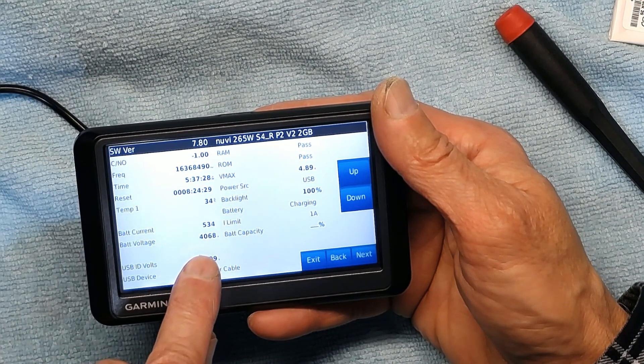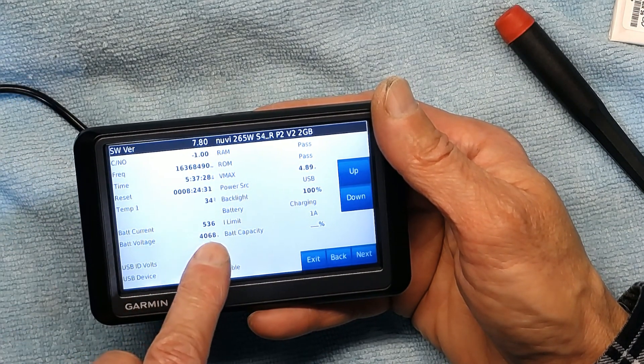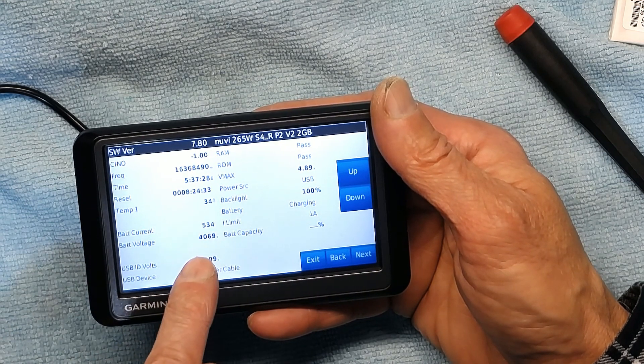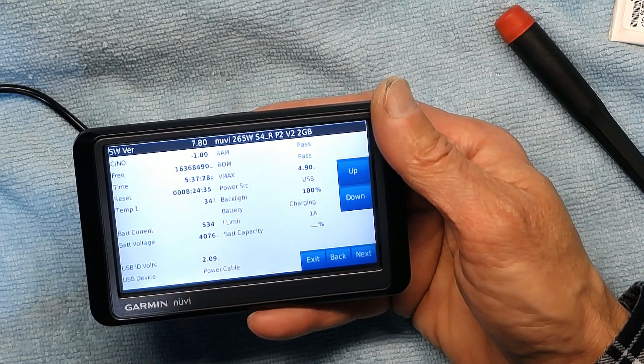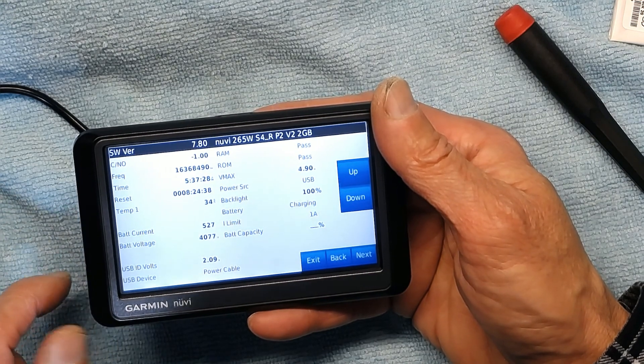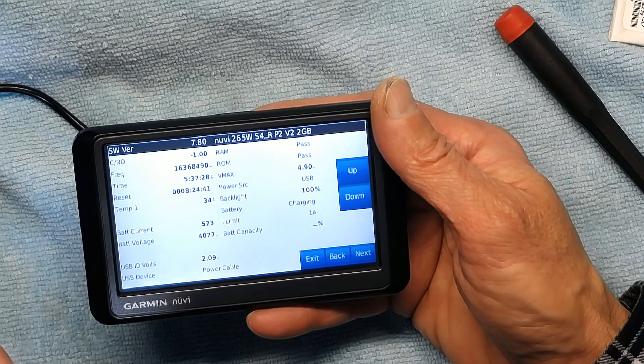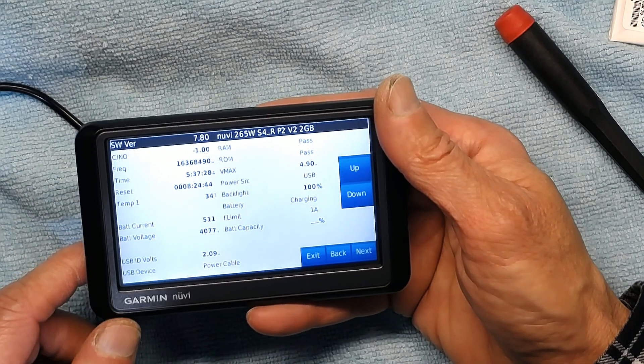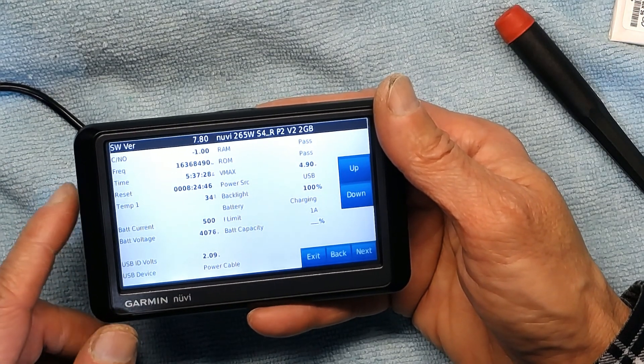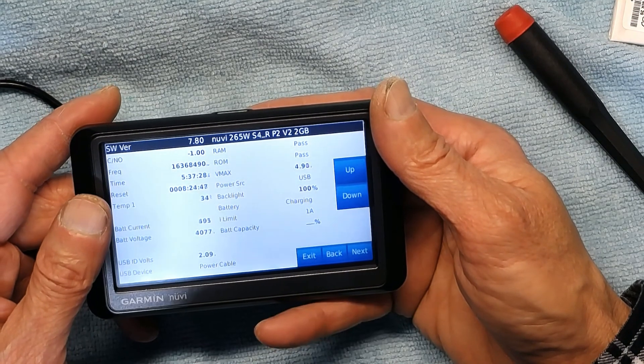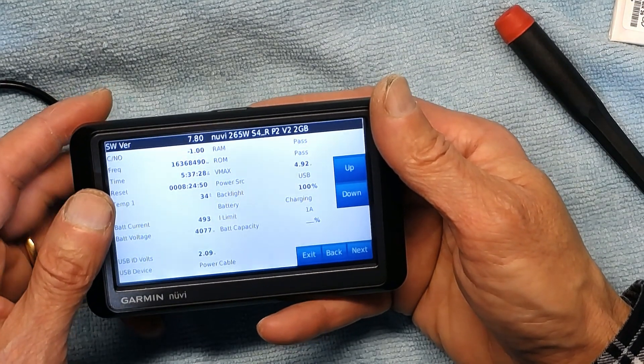For example, this is 4000 millivolts. This is 534 milliamps. So 4069 millivolts is 4.07 volts, and 531 milliampere is actually equivalent to 0.5 ampere. Okay, so this is a healthy battery, it's a good battery.